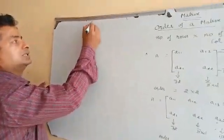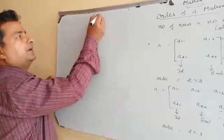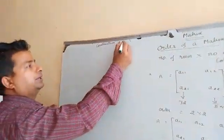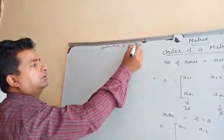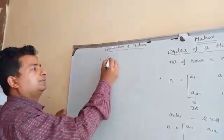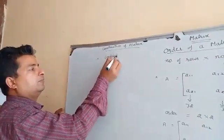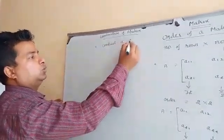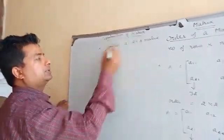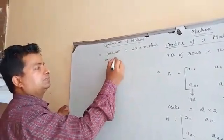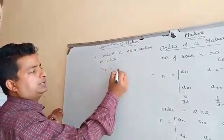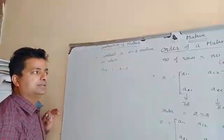After this, we will discuss the construction of a matrix. For example, construct a 2 by 3 matrix in which Aij is equal to i minus j.